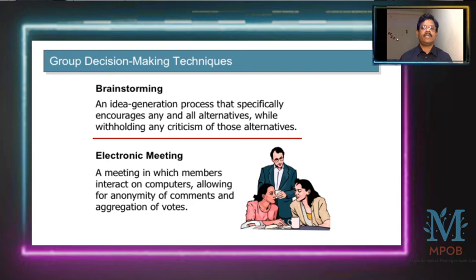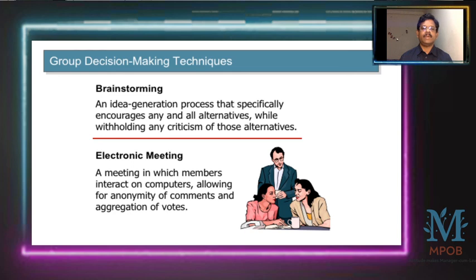Further, decision making techniques include brainstorming — an idea generation process that specifically encourages all alternatives while withholding criticism of those alternatives. There is also electronic meeting, in which members interact via computers, allowing for anonymity of comments and aggregation of votes. We are using online platforms to organize meetings electronically and resolve various issues by taking decisions after consultation of various group members.